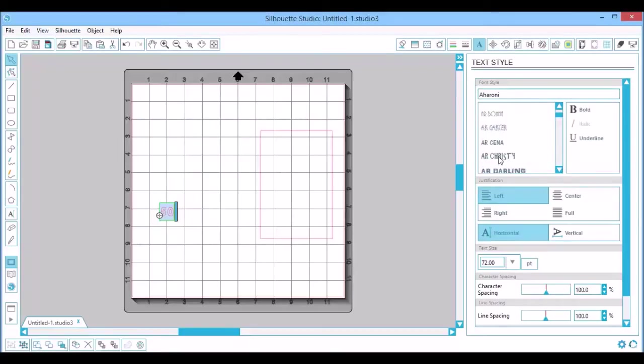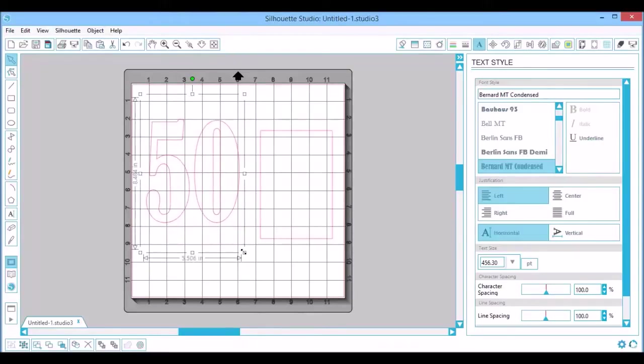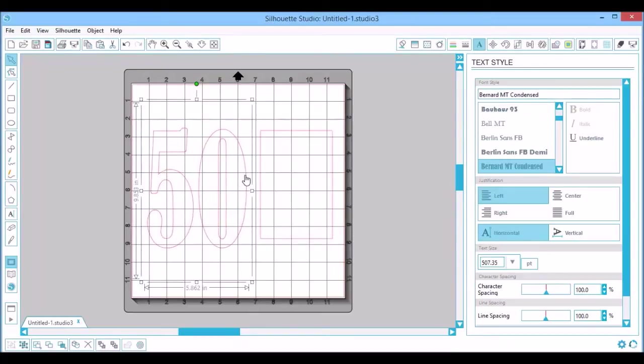The one I end up using is Bernard MT Condensed. It's one of my favorite fonts for this kind of thing. You just want something that has the area for the numbers themselves is fairly large so that they'll show up well or that the stuff underneath will show up well. Getting it in the size and position that I want it on the paper, since I'm going to be cutting this right out of the background.